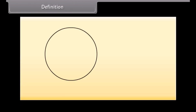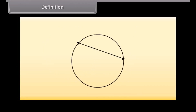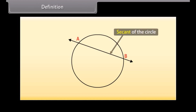Definition. Students, let us draw a circle and a line in a plane. We can see that the line and the circle do not have any common point. So the line is called a non-intersecting line with respect to the circle. In another case, we can draw a line and a circle with two common points A and B. In this case, the line is called a secant of the circle.